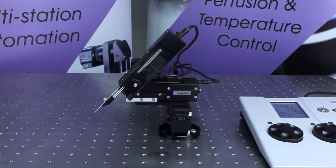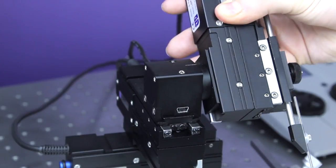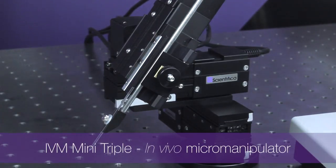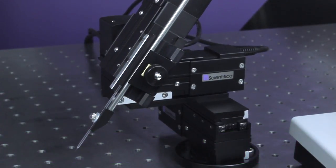It provides three axes of motorised travel and a rotational axis for approaching the sample at a mechanically set angle. This angle can be reviewed in the Linlab software for improved repeatability.